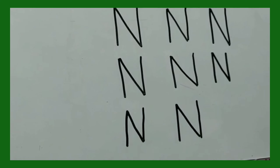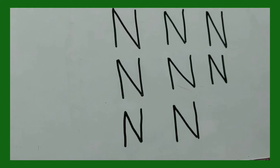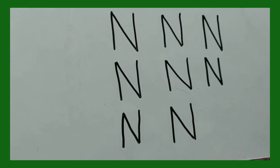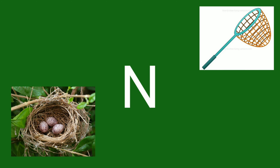So children, now we will see what are the things that begin with this letter. Which letter? Letter N. N for net — say the word, children: N for net. Next is N for nest — say the word: N for nest. Nest is the place where a bird lives, right? Can you see something in the nest? Yes — eggs.